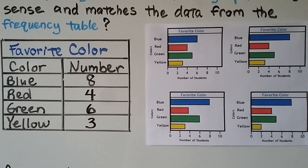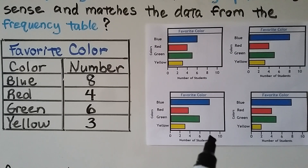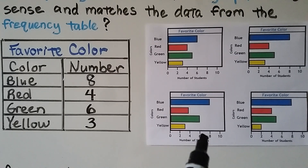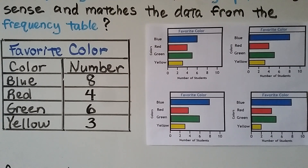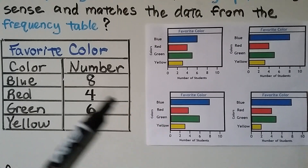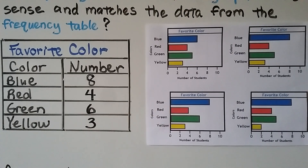This is the only one left, so it must be correct — but let's double-check. Blue is eight, red is four, green is six, and yellow is three. This is the correct bar graph that matches the frequency table. All the answers have to match the numbers from the frequency table.